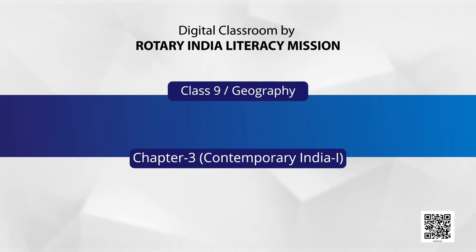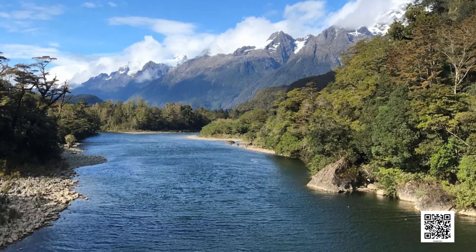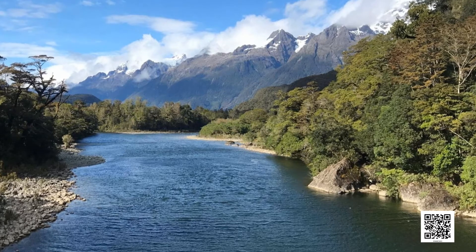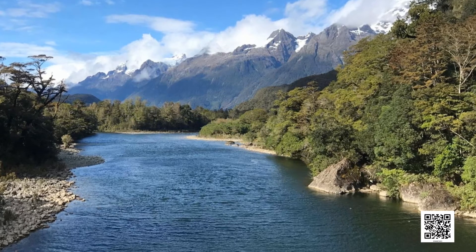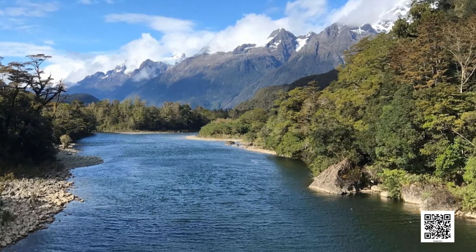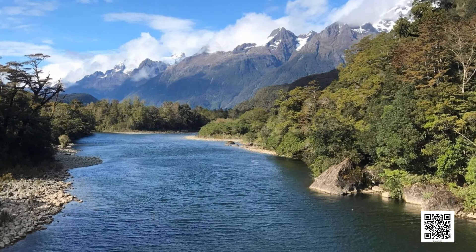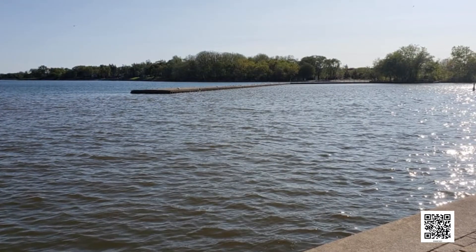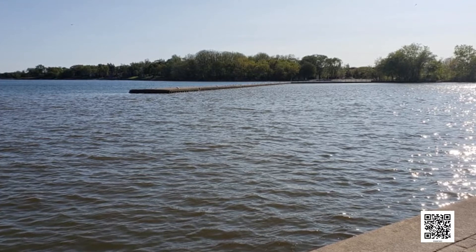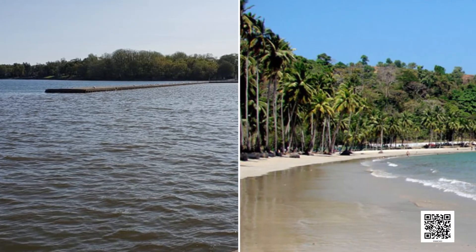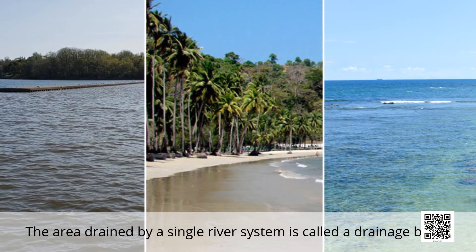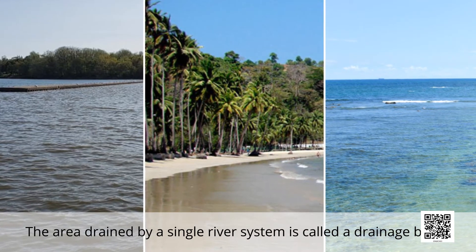The term drainage describes the river system of an area. Small streams flowing from different directions come together to form the main river, which ultimately drains into a large water body such as a lake, sea, or ocean. The area drained by a single river system is called a drainage basin.